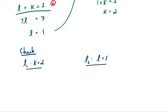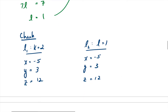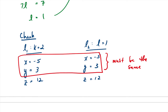Substituting k equals 2 into line one, we get x equals negative 5, y equals 3, and z equals 12. Doing the same for line two with l equals 1, we also get x equals negative 5, y equals 3, and z equals 12. This proves the point of intersection is (−5, 3, 12). The x and y values must match since we used those equations to find them. What identifies skew lines versus intersection at a point is the z component — since both z values are the same, the lines intersect at (−5, 3, 12).